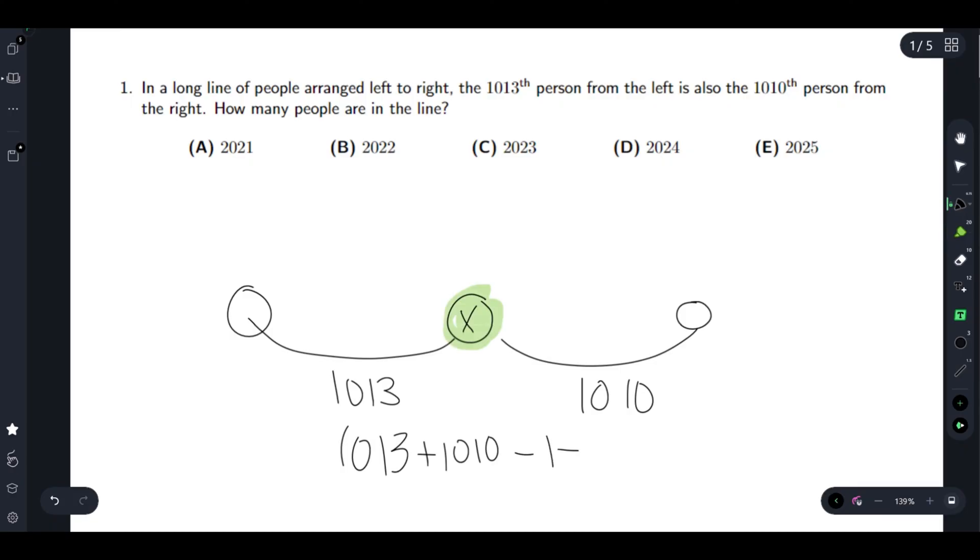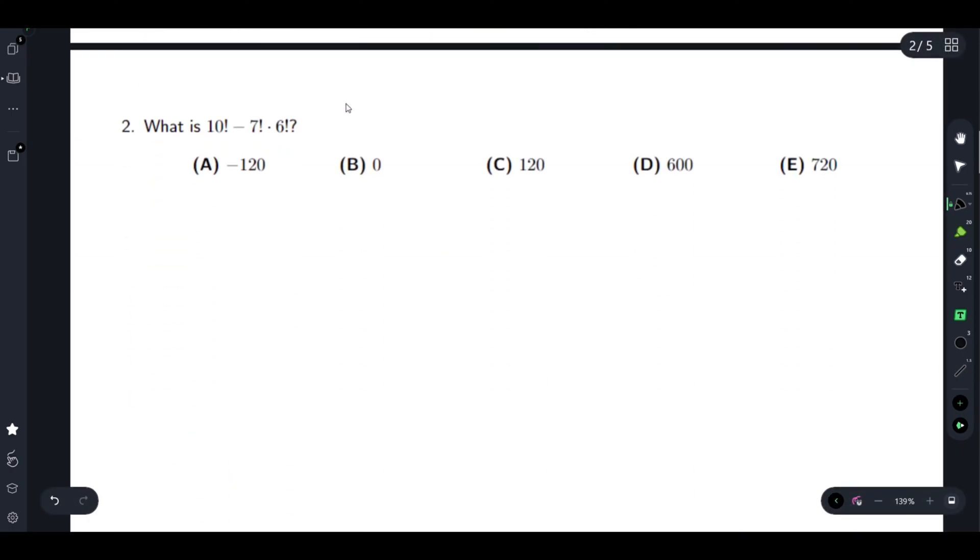Next one: What is 10 factorial minus 7 factorial times 6 factorial? We can factor out a 7 factorial. 7 factorial times 10 times 9 times 8 minus 6 factorial. This is 720 and 6 factorial is 720, so we get 7 factorial times zero.